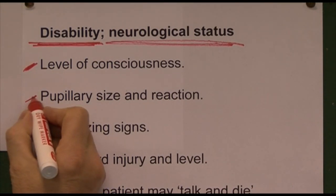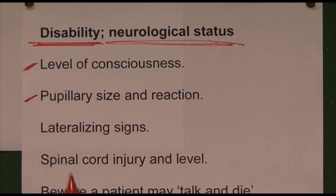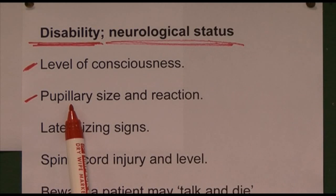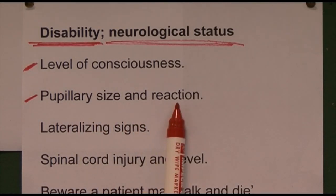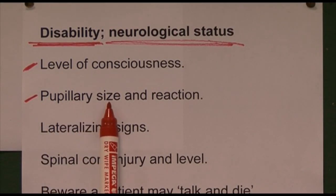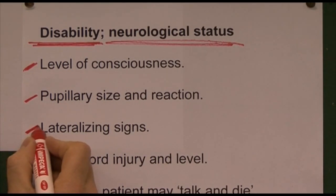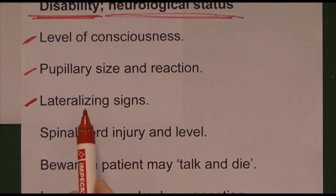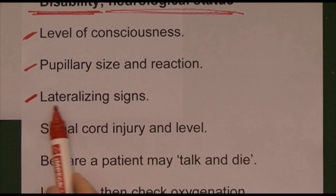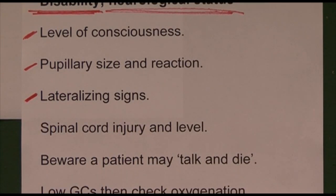Assess pupillary size and reaction, as this will tell us if there is compression of the oculomotor nerve indicating intracranial pathology. First the pupil will become sluggish, then eventually unreactive and dilated. The dilated pupil occurs on the same side as the pathology — so if there's a left haematoma developing, it will be the left pupil that starts to dilate first. Also check for lateralising signs — weakness in the arms or legs on one side not present on the other — which may indicate growing intracranial pathology.